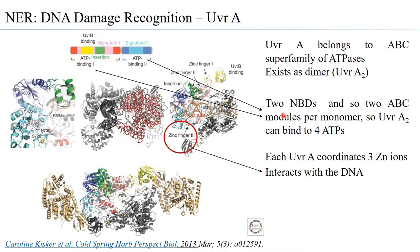There are three associated zinc ions in the form of zinc fingers in both monomers. Zinc fingers one and two mainly have structural implications on the monomer itself, while the third zinc ion is reported to associate with the DNA. So the interaction of UVR-A with the DNA is attributed to the presence of this zinc finger in the protein.